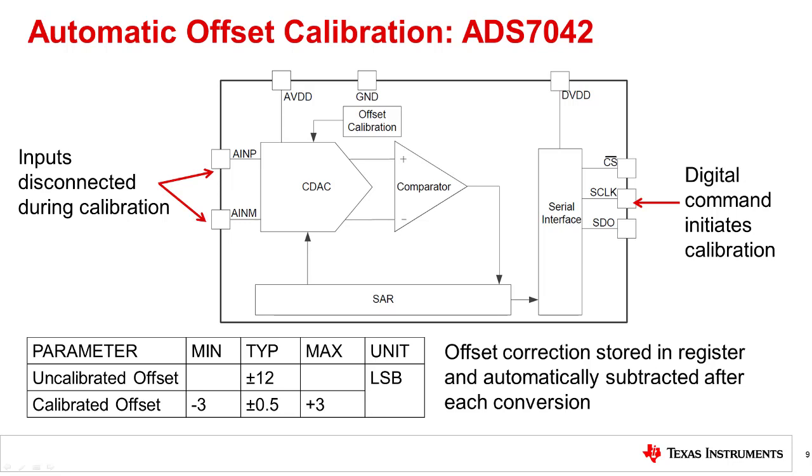Some data converters have a convenient feature that allows automatic offset calibration. In general, this calibration is initiated by sending the ADC a digital command. This can be done periodically so that offset drift is also accounted for. During calibration, the ADC's inputs are disconnected from the rest of the circuit. So special calibration test signals are not required. Note that in this case, the calibration only applies to the data converter and offset errors from the rest of the signal chain are not corrected for in this automatic calibration. The digital value for the offset is stored in a register after calibration. The offset register is automatically subtracted from readings after calibration to correct for the offset error.